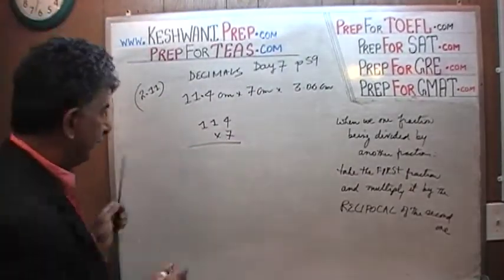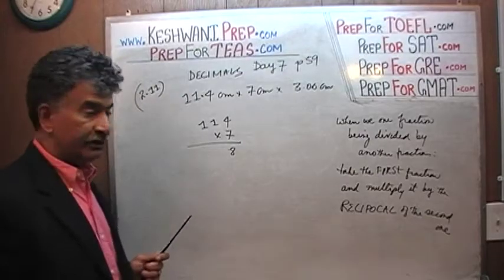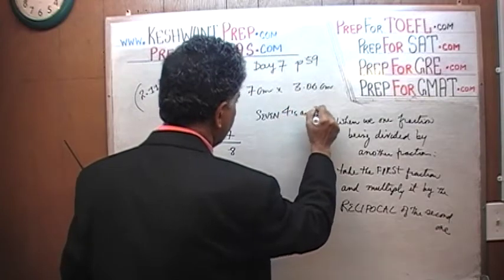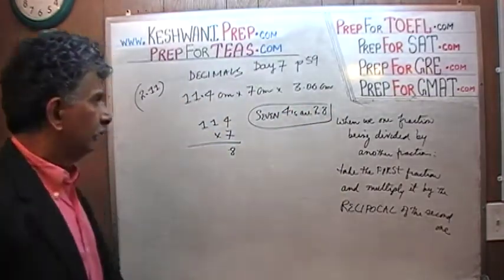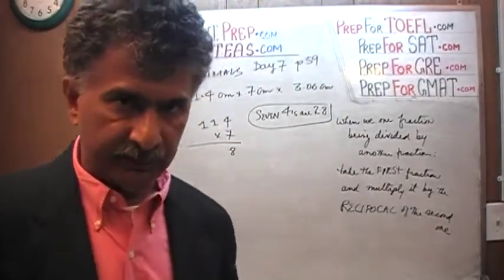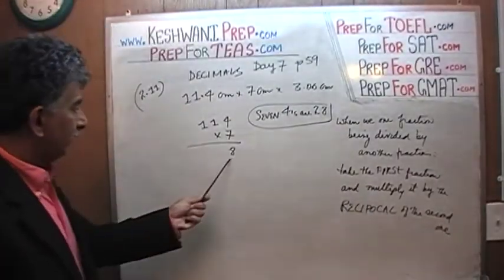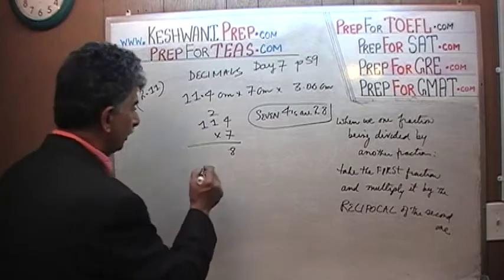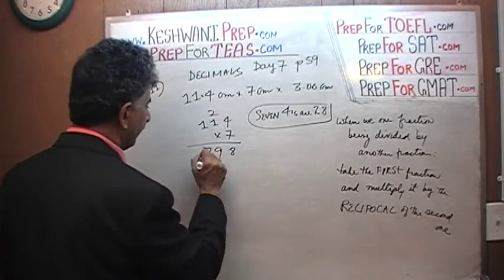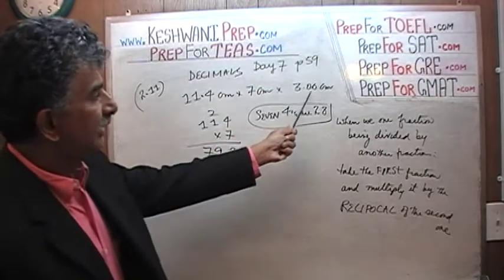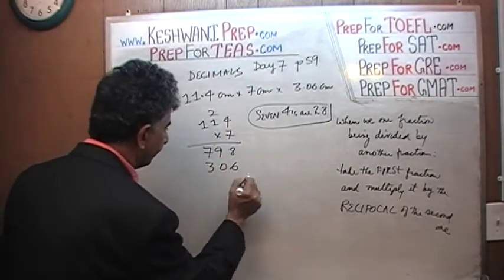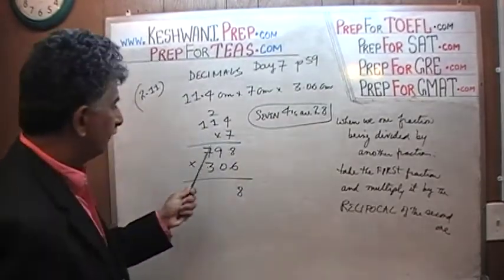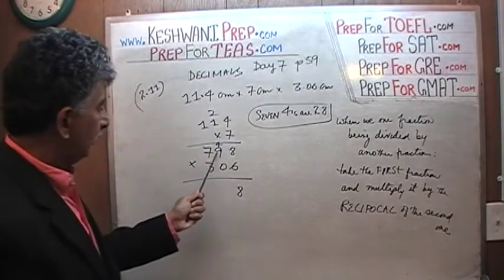7 times 4 is 28 — write 8, carry 2. 7 times 1 is 7, plus 2 is 9. Then 7 times 1 is 7, giving us 798. Now we multiply 798 by 306. 8 times 6 is 48 — write 8, carry 4. 9 times 6 is 54 — slow down here, otherwise you're going to mess it up.